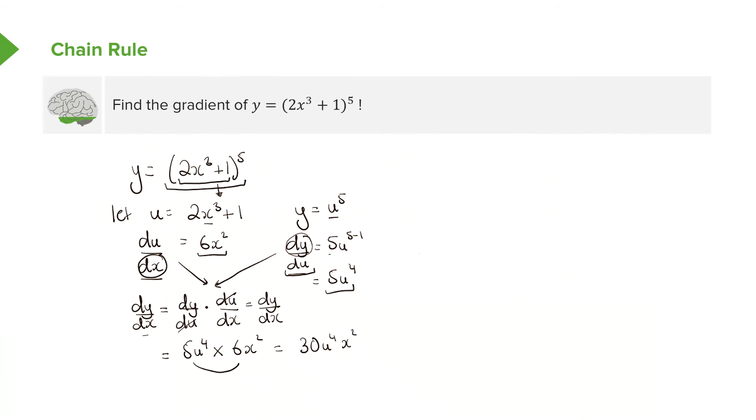The question or the answer shouldn't have a u in it. Remember, u was our own doing, so we kind of used u as our own substitution. So you can replace this u with this function here, just replace it back to what we changed it to earlier, to give us 30(2x³ + 1)⁴x². Or just to write this correctly, we can write it as 30x²(2x³ + 1)⁴.